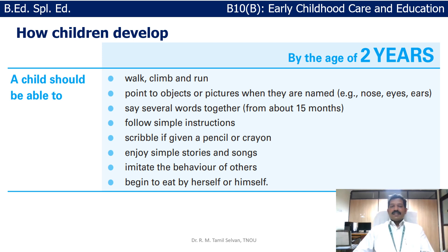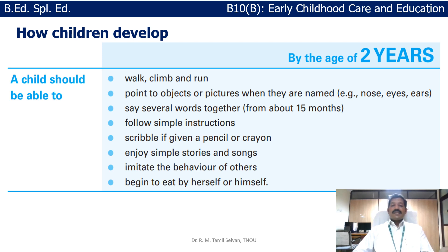Every child at this age loves to scribble or do some drawings — if you give them a pen, pencil, or crayons, they will start scribbling on paper, walls, or any flat surface. The child should be able to enjoy simple stories and songs, which is quite natural for a two-year-old. Importantly, the child will begin to imitate the behavior of others, which is a natural way of learning new behaviors.